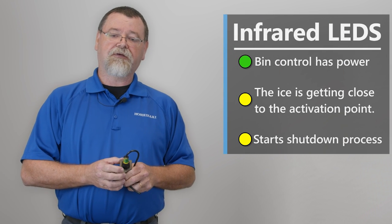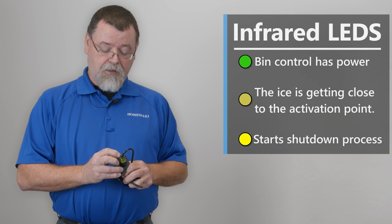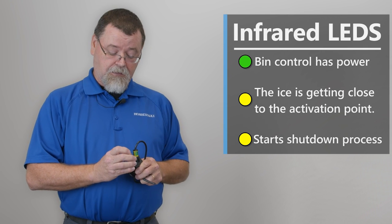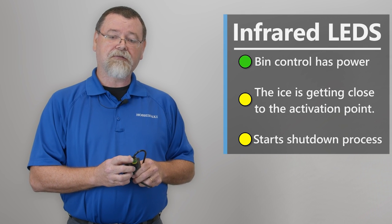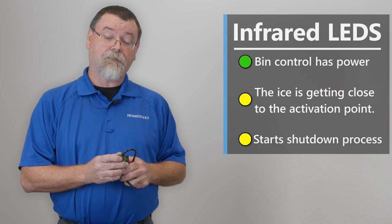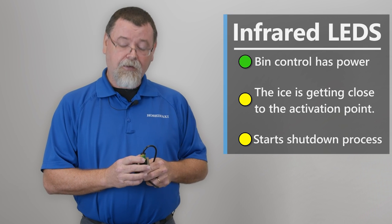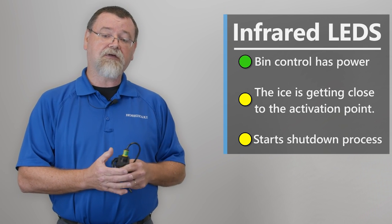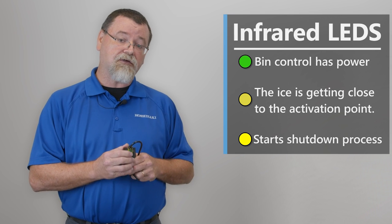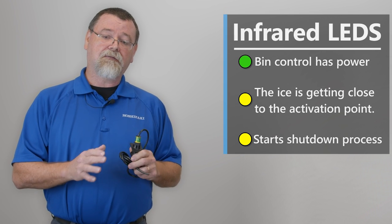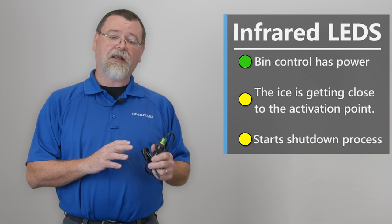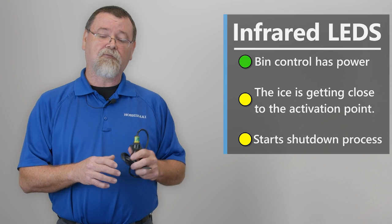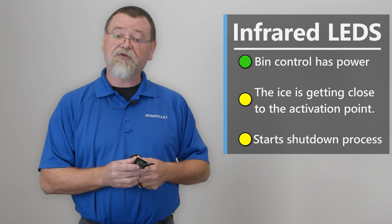So the infrared sensor has two LEDs on it. There's a green LED indicating that it has power, and there's a yellow LED that indicates the ice level and approaching ice level. Once the ice starts rising and gets close to the activation point, it starts flashing yellow. The activation point of the bin control is actually between 11 and 13 inches. Once it reaches that point, the yellow light goes solid and then it starts a shutdown process.